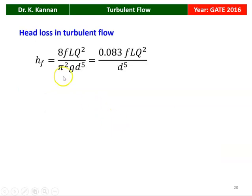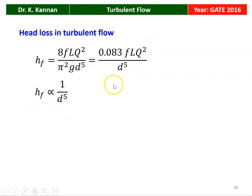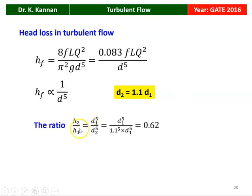Head loss in turbulent flow: HF = 8*F*L*Q^2 / (pi^2 * G * D^5). Substituting constants, HF = 0.083 * F * L * Q^2 / D^5. So HF is proportional to 1/D^5. Now D2 = 1.1 * D1 (10% increase). Therefore H2/H1 = D1^5 / D2^5 = D1^5 / (1.1^5 * D1^5) = 1/1.1^5 = 0.62. The answer is H2/H1 = 0.62.